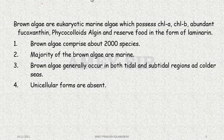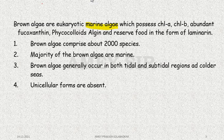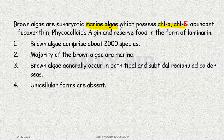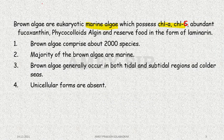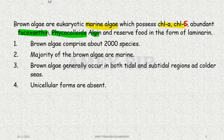Similar to Red Algae, Brown Algae are also Marine Algae and possess Chlorophyll A and Chlorophyll C. They have abundant Fucoxanthine, Phycocolloids, and reserved food in the form of Laminarine.